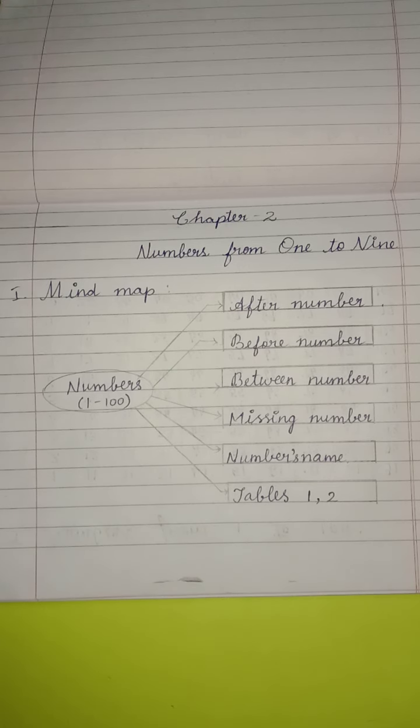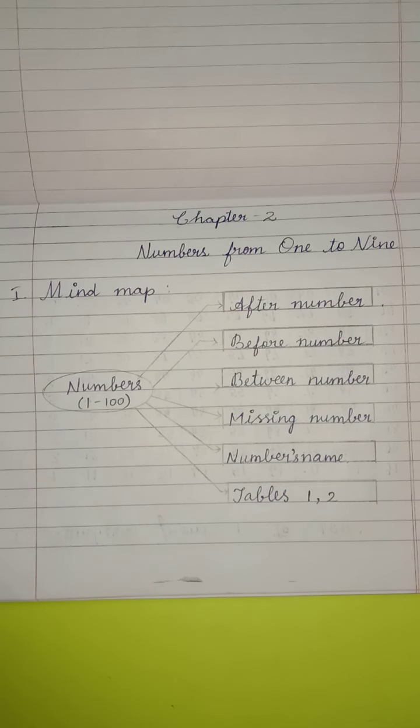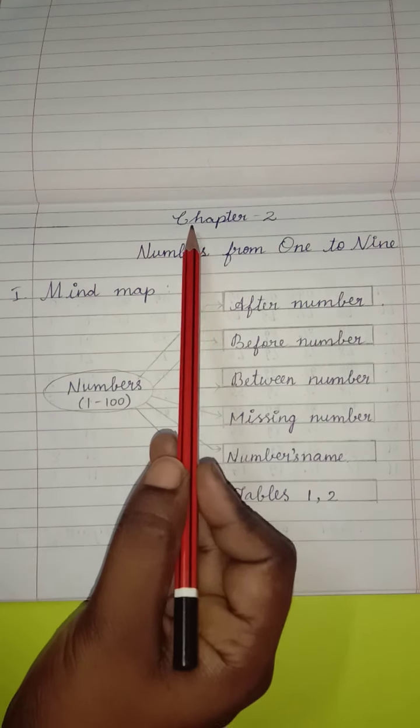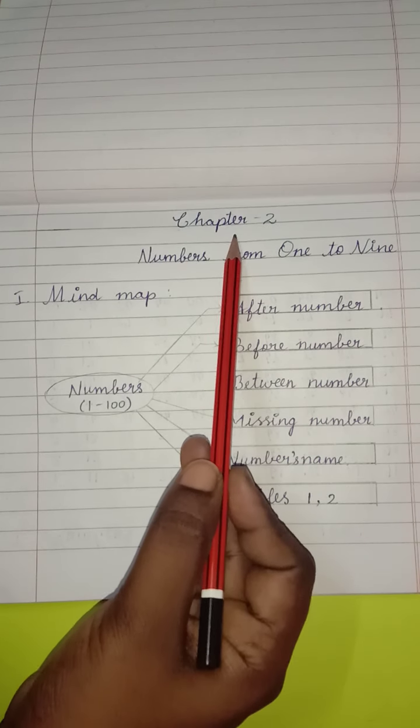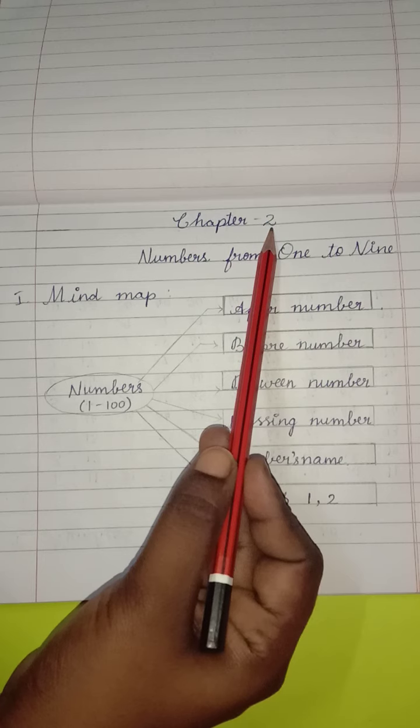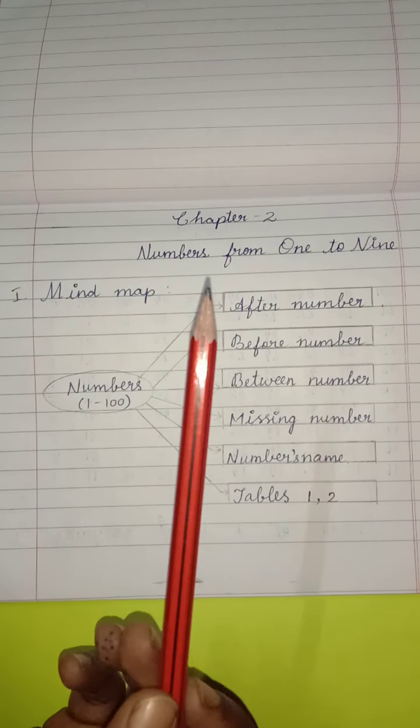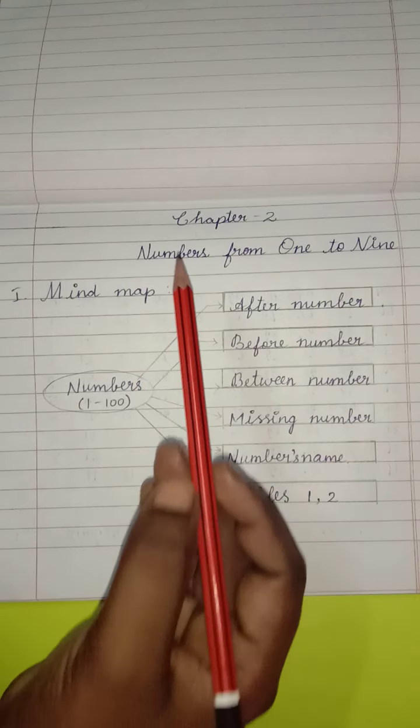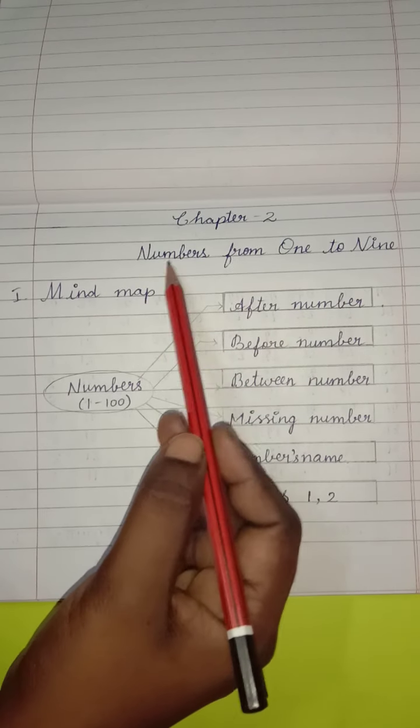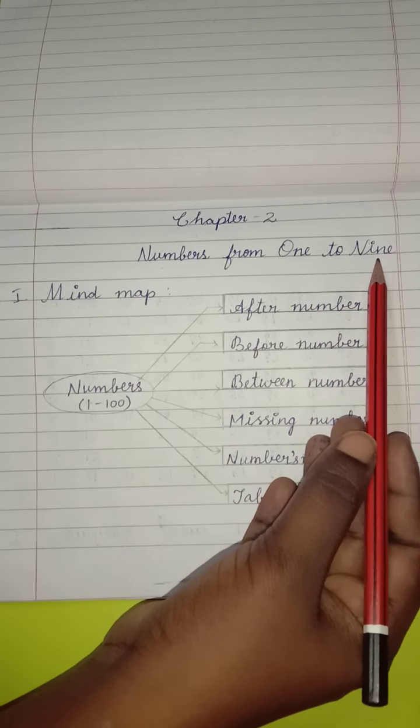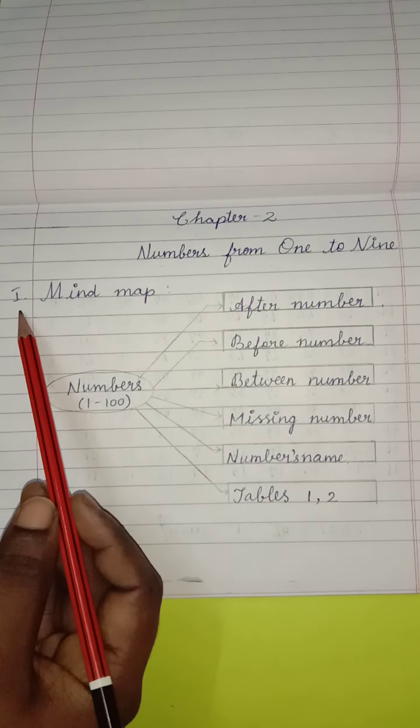Then leave one page, first page, and then take a fresh page. Write in the center: Chapter 2. Children, you should write in pencil. Sharpen your pencil and write neatly. Say and write: Chapter 2, Numbers from 1 to 9. Come to Romalator 1.